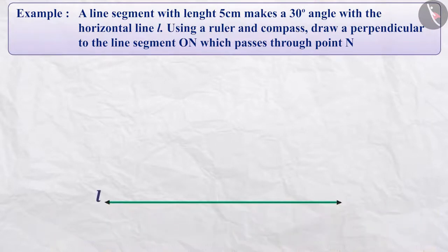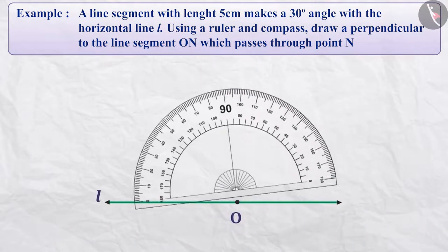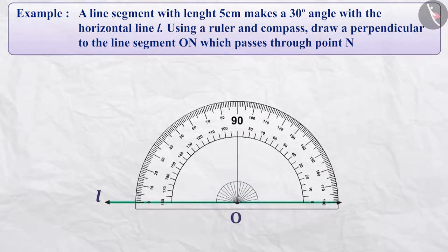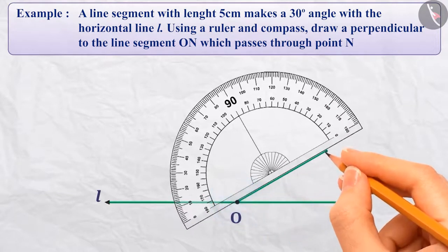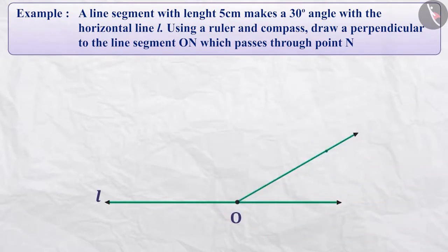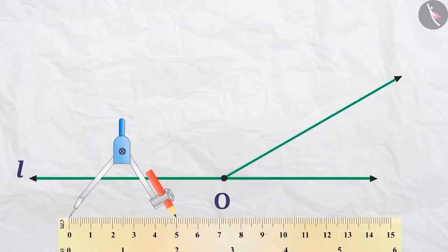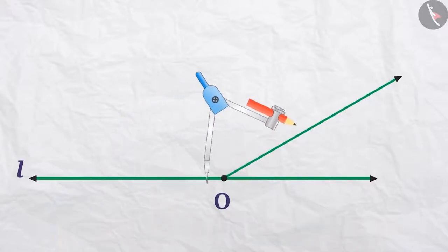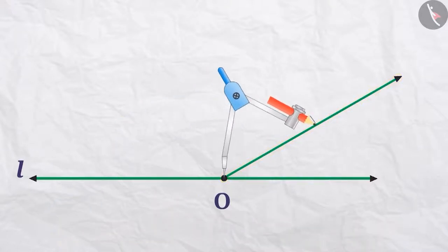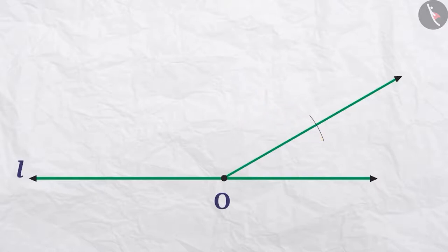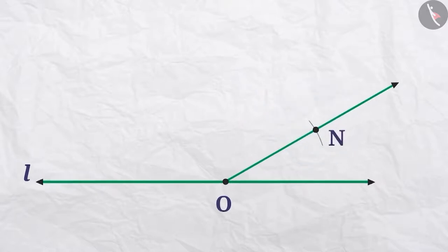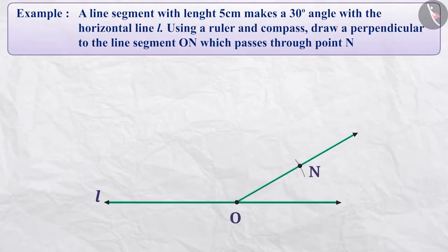First, we will draw a horizontal line and mark point O on it. By placing the protractor correctly at point O, we will mark a point opposite 30 degrees. Next, we draw a ray starting from O passing through this point. Open the compass for the required radius of 5 cm. Placing the pointed end of the compass at O, we will draw an arc that cuts this ray and label it as intersection N.